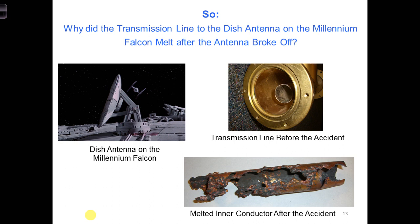So let's get back to our question and our challenge. What do you think happened to the transmission line on the Millennium Falcon? It was connected to an antenna, but then the antenna suddenly broke off. What happened along the transmission line when the antenna broke off and the load suddenly became an open circuit?